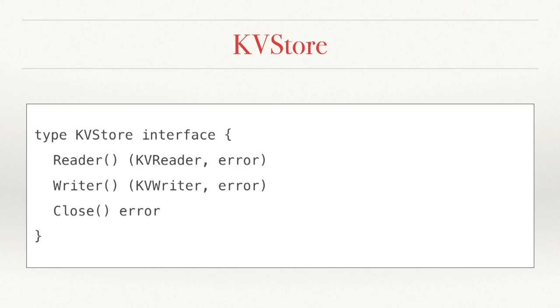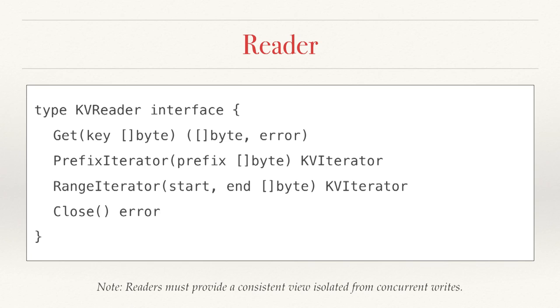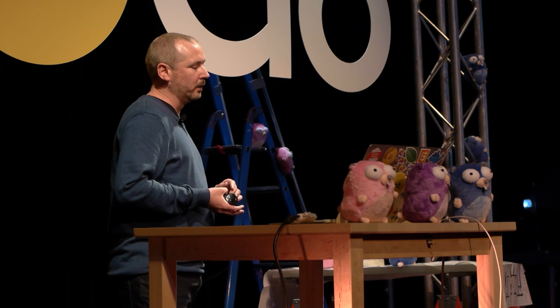The basic idea is Blovie doesn't care how we read and write data as long as it conforms at the lowest level to this KVStore interface, and that allows us to plug in a whole bunch of alternative implementations. KVStore can be divided up into two pieces: a reader and a writer — and those are also interfaces. The reader has three methods that are really important. We have a get, which is your standard key-value lookup. Then we have two iterators: the first is a prefix iterator, which has to iterate all the keys that start with a given prefix, and the second is the range iterator, which has to iterate all the keys between the start key and end key. Readers must also provide a consistent snapshot view of the data that's separate from any concurrent writes that may be happening at the same time.